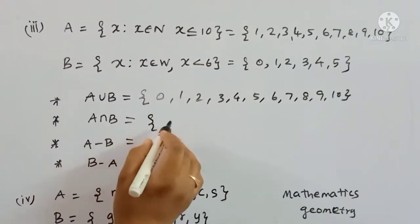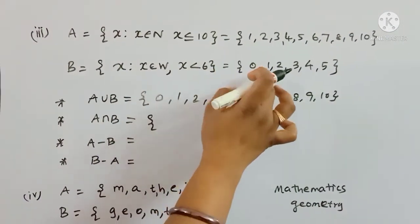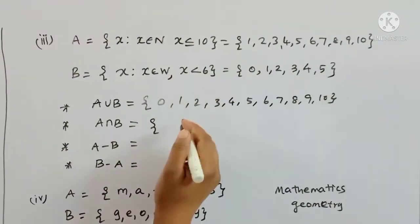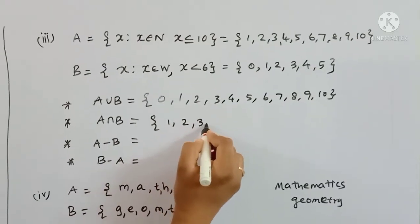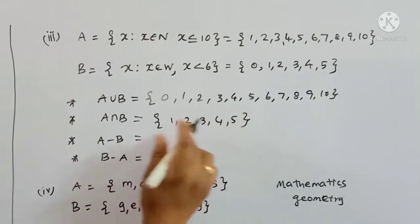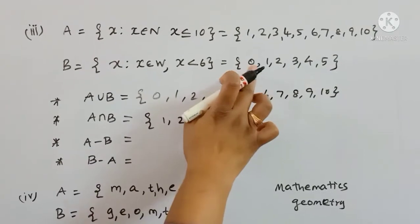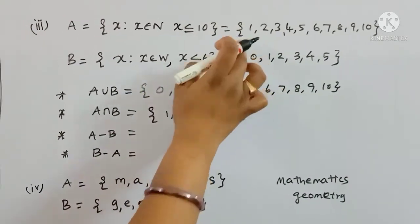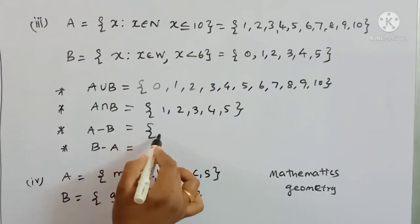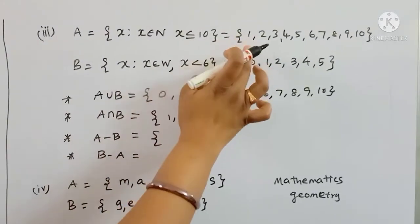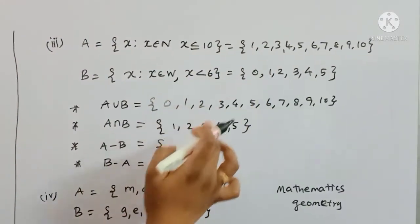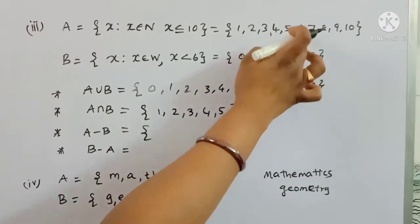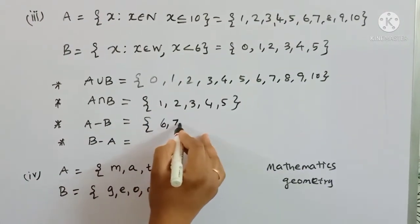Set B: x such that x belongs to whole numbers, x < 6, so x = {0, 1, 2, 3, 4, 5}. Then A minus B gives us the elements in A not in B: 6, 7, 8, 9, 10 — since those are in A but not in B.